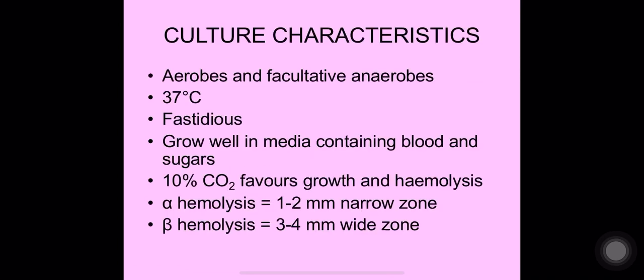Cultural characteristics of streptococci: they are aerobes and facultative anaerobes, grow optimally at 37 degrees Celsius, and are fastidious — meaning they require extra nutrition and will not grow on nutrient agar. They need supplements like blood, serum, egg, or albumin. They grow well in media containing blood and sugars, and 10% CO2 favors their growth.